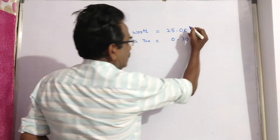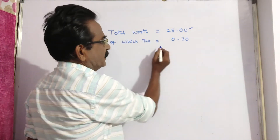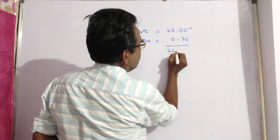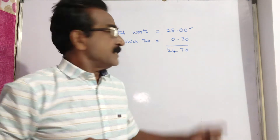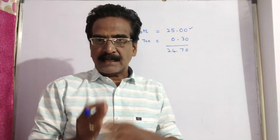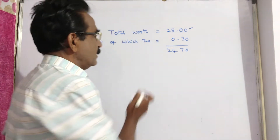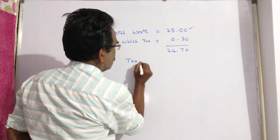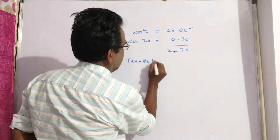Total worth: she bought rupees 25, out of which tax is 30 paise, so the remaining rupees 24.75 is the total cost of taxable items and non-taxable items combined. Now, what is the cost of taxable items?